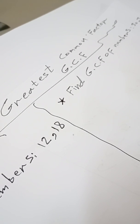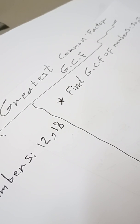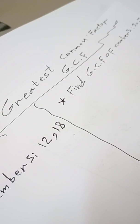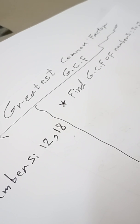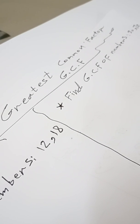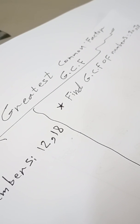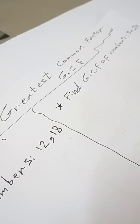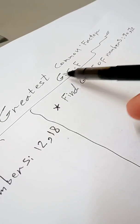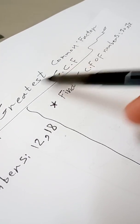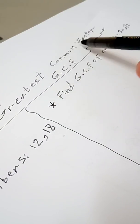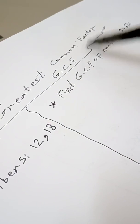Assalamu alaikum wa rahmatullahi wa barakatuh. Bismillah ir-rahman ir-rahim. Math grade 5 — today we want to learn how to find the greatest common factor, GCF. The symbol is GCF: G means greatest, C means common, and F means factor.